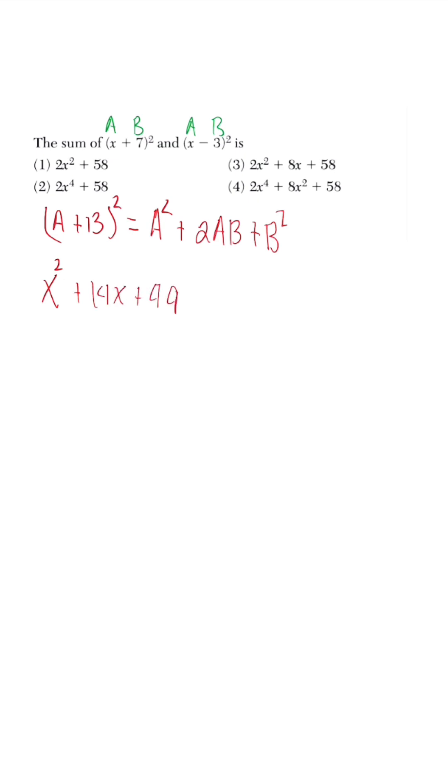When we look, first term is squared. The middle term is A times B, which is 7X. We multiply that by two to get 14X. And then the B squared term is just seven squared.